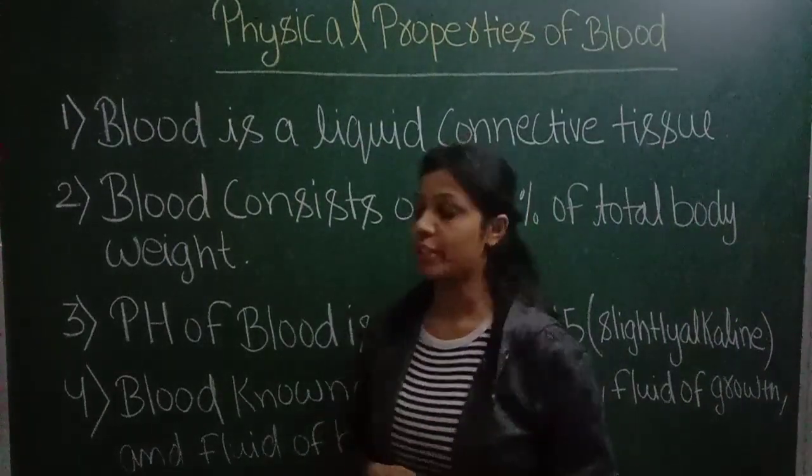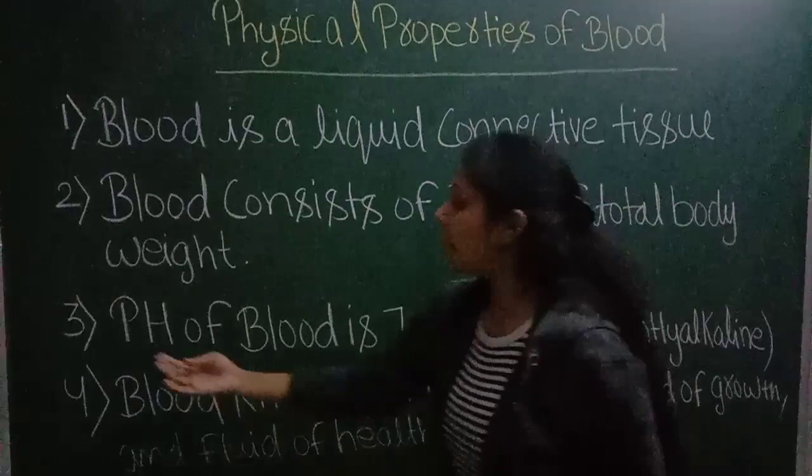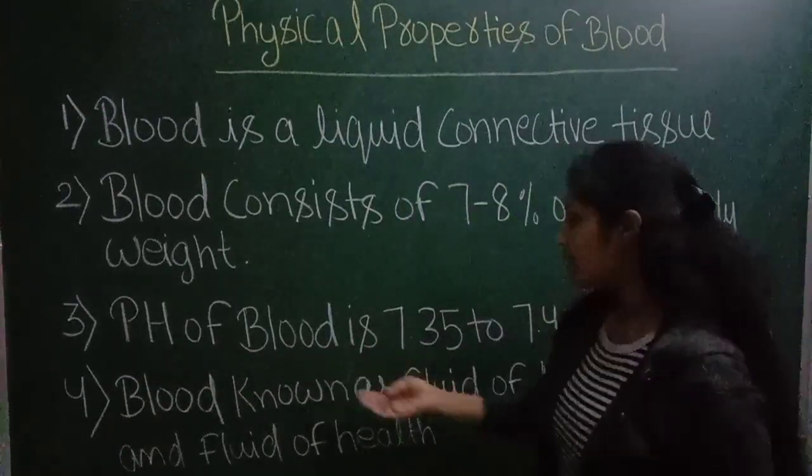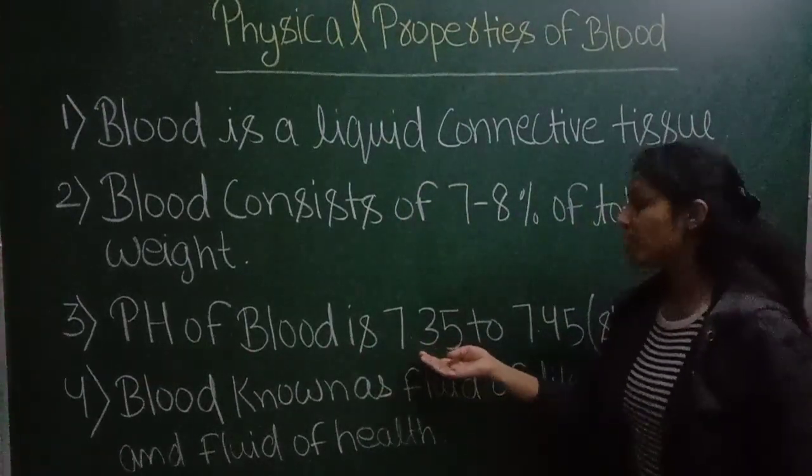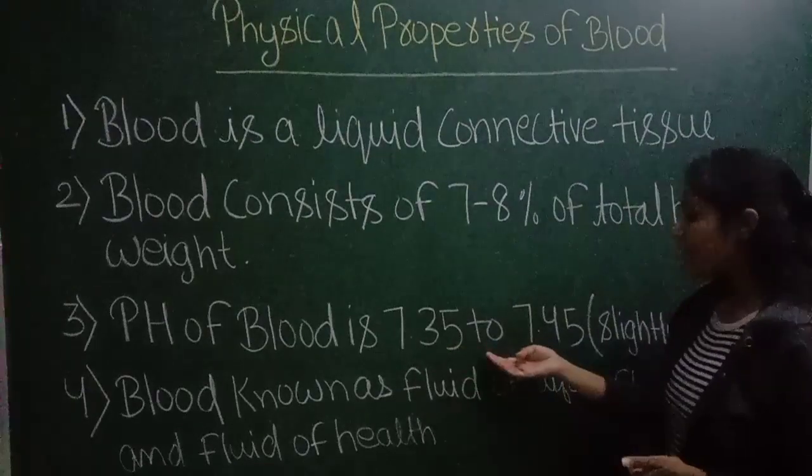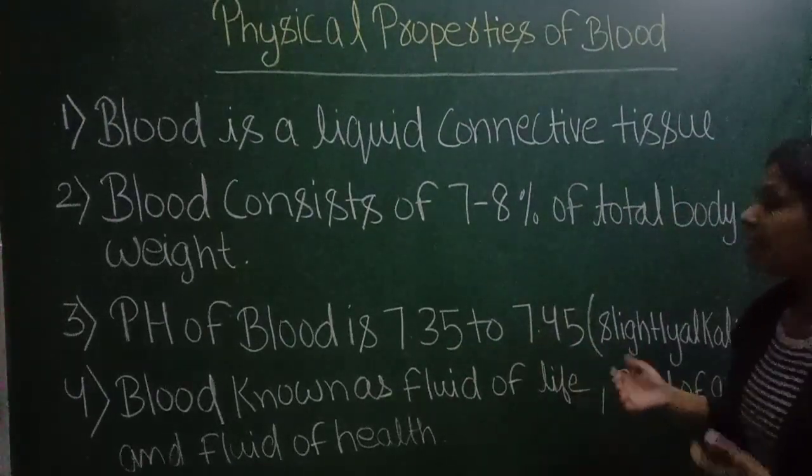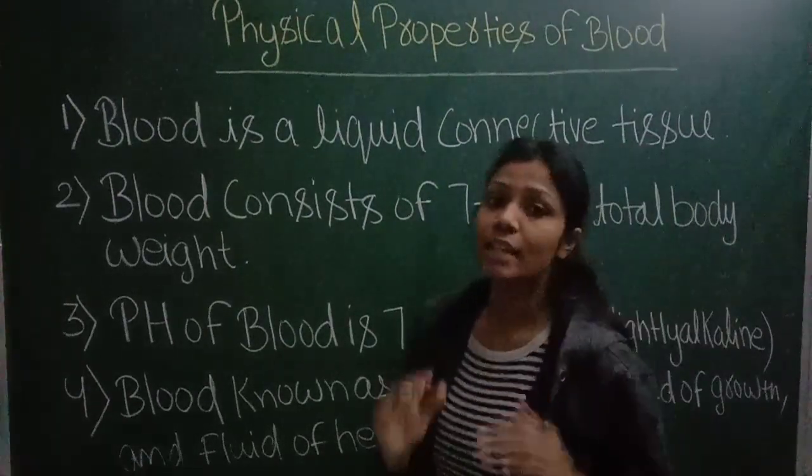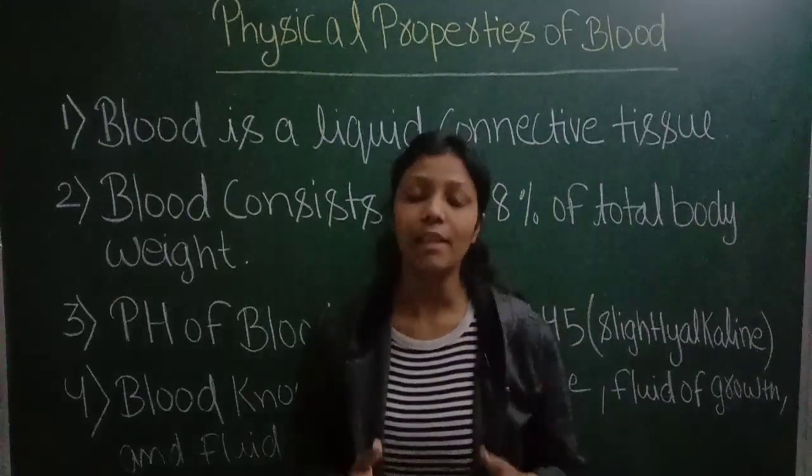The pH of blood is 7.35 to 7.45, that is, blood is slightly alkaline in nature.